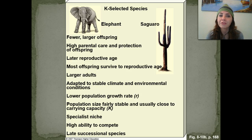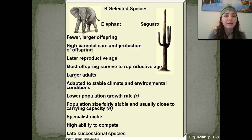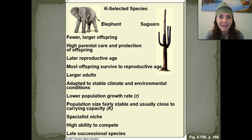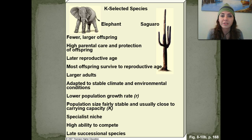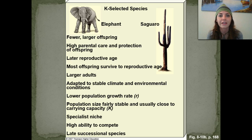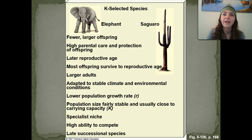K-selected species are typically larger, grow more slowly, and invest more in their offspring. An example animal would be an elephant and an example plant would be a saguaro cactus. They have fewer, larger offspring with very high parental care and protection. Mothers are very protective — anybody comes near that child and they will defend it fiercely, potentially killing other species that threaten their young. Unlike R-selected species where most offspring don't reach reproductive age, in K-selected species the majority do, because parents take good care of them to ensure they're healthy and reach reproductive age to continue the species.